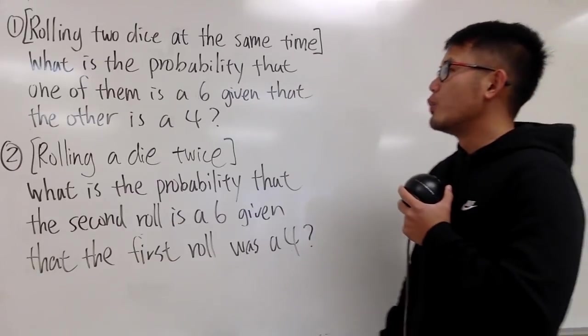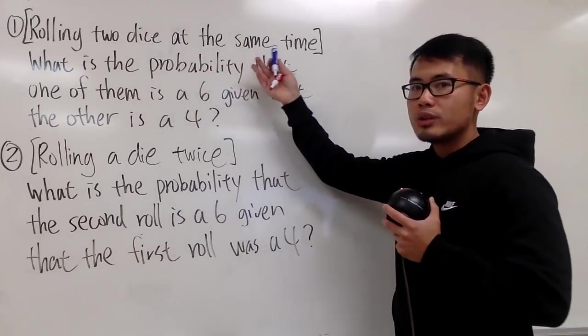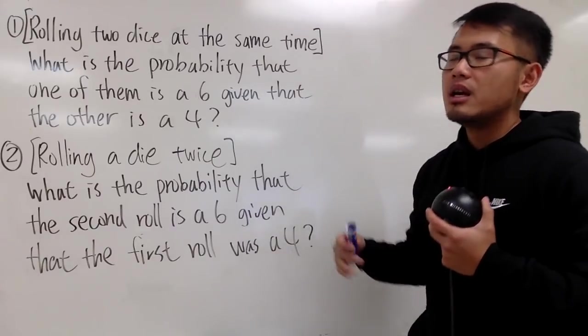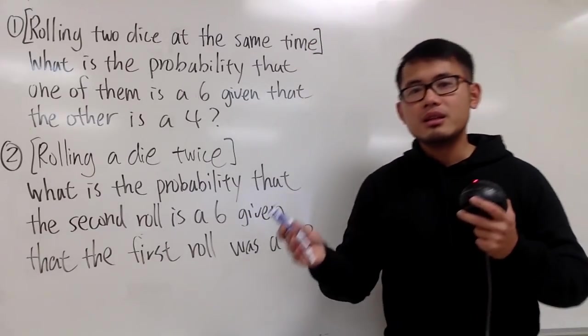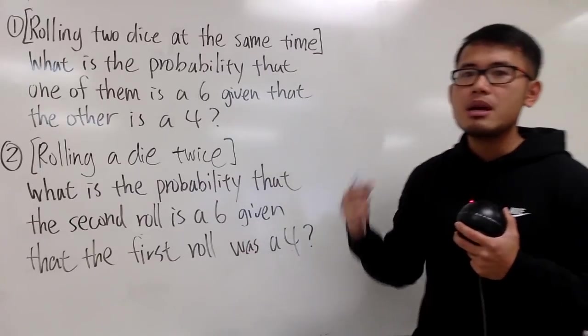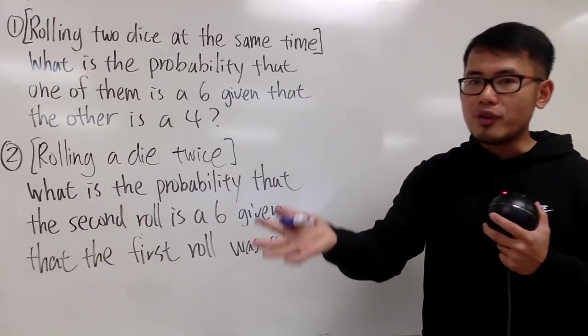The first one, we have two dice, and we are going to roll them together at the same time. This is the same situation like last time, even though I didn't mention at the same time, but I did talk about we roll both of them.